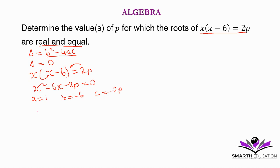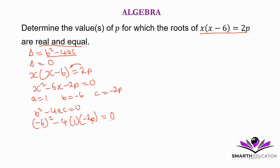Let's put these into our discriminant. b squared minus 4ac is equal to 0. So negative 6 squared minus 4 times 1 times negative 2p is equal to 0. Let's simplify: negative 6 squared is 36. Negative 4 times 1 times negative 2p is positive 8p, so 36 plus 8p is equal to 0. Then 8p is equal to negative 36. Divide by 8 on both sides.